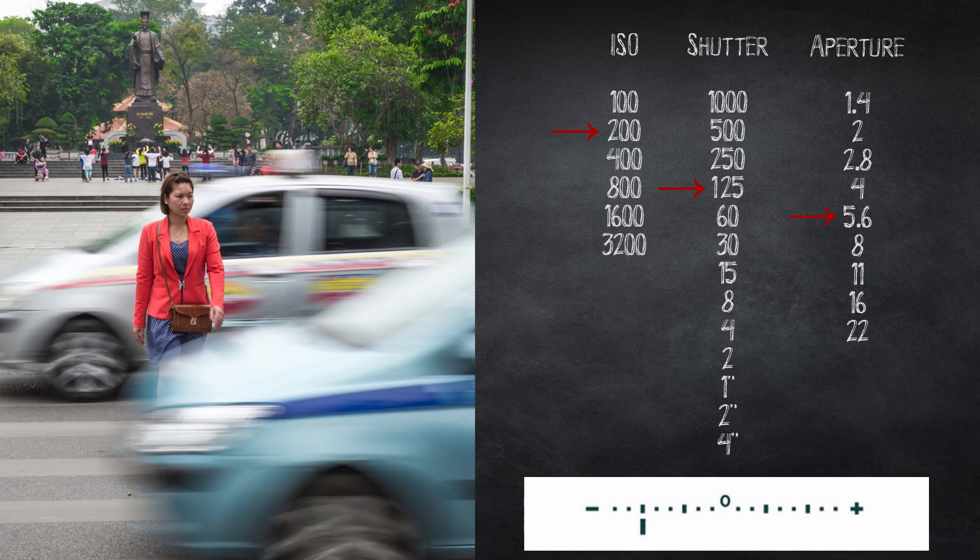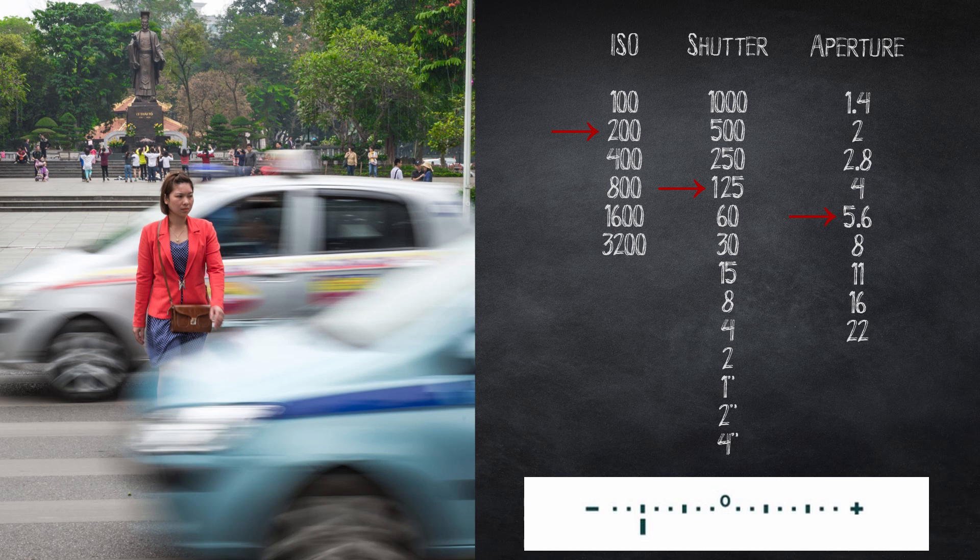In this case we want the cars to be blurred to show movement. Ideally we want the girl to be frozen but it's not a deal breaker if she has a little motion blur. We want the scene to be sharp and we don't really care too much about depth of field.